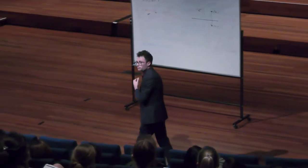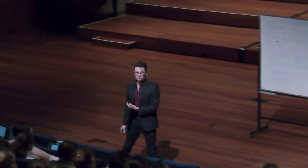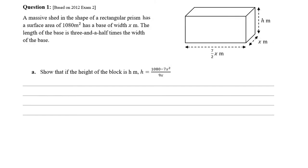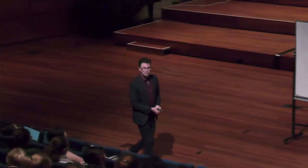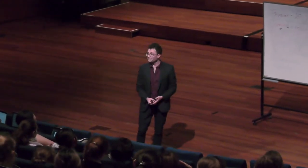But just because they have a diagram doesn't mean that you shouldn't draw more stuff. So with this one, it says, show that if the height of the block is h metres, h equals all of this. At this point, you have to look at what you've got and figure out what you can do to get the answer, or do some math stuff and see what pops out.